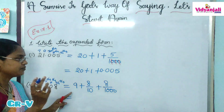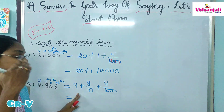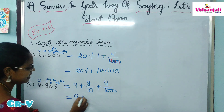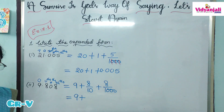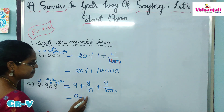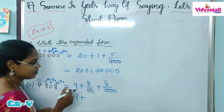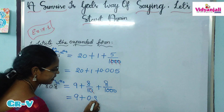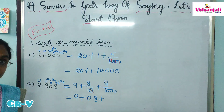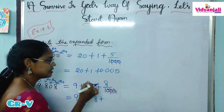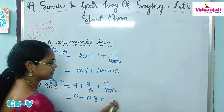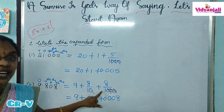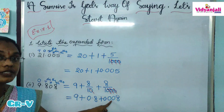Let us write the decimal expansion. In decimal expansion, the whole part never changes, so let us write 9 as it is. 8 by 10 can be written as 0.8, because there is 1 zero in the denominator, so 1 digit before the point — 0.8. In 8 by 1000, how many zeros are there? 3 zeros, so 3 digits before the point. 8 is there, take 2 more zeros, keep a point. So 8 by 1000 means 0.008.